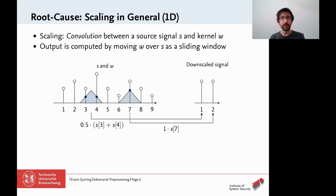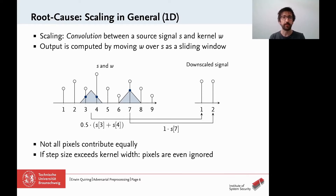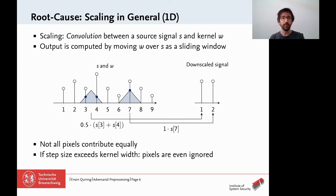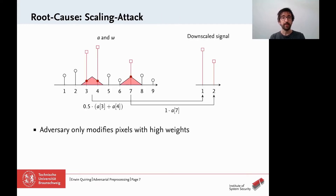This example depicts bilinear scaling as implemented by TensorFlow. We can observe two interesting points. First, not all pixels equally contribute to the downscaled output — only pixels close to the center of the kernel receive high weighting. Second, if the step size exceeds the kernel width, pixels are even ignored. In this example, scaling from 9 pixels to 2 pixels required a larger step size, and only 3 out of 9 pixels were used for downscaling.